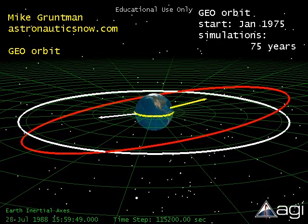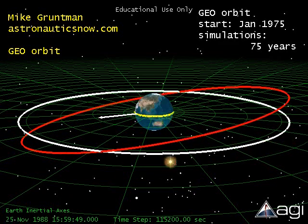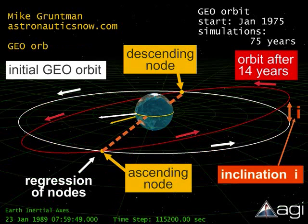In this first segment of simulations, we covered approximately 14 years. With current inclination about 10 degrees, one can easily notice the motion of the points of intersection of the red and white orbits. This is regression of nodes caused by the Earth's oblateness. These two points are known as the ascending node and the descending node, and the line connecting them, shown as the dash-orange line, is the line of nodes. The line of nodes crosses the center of the Earth and rotates in the equatorial plane.